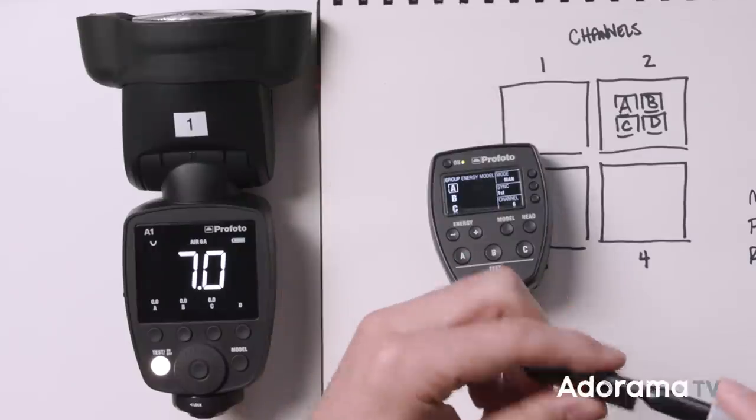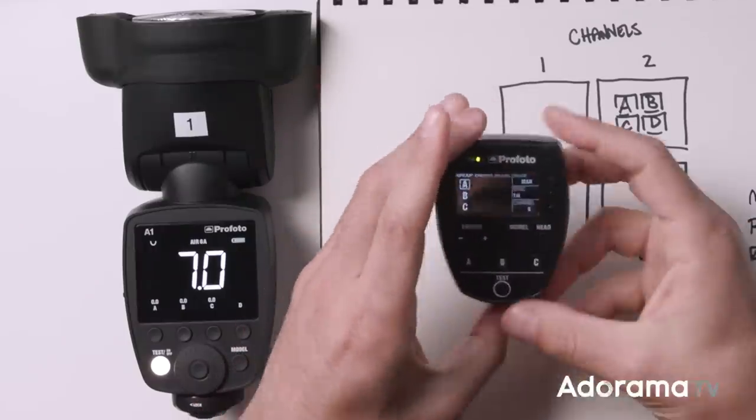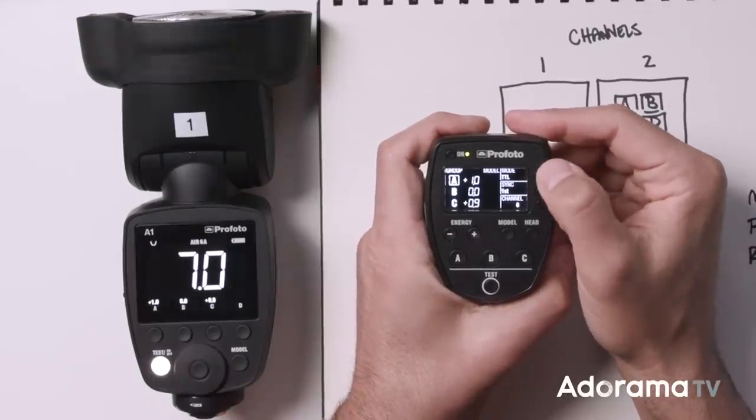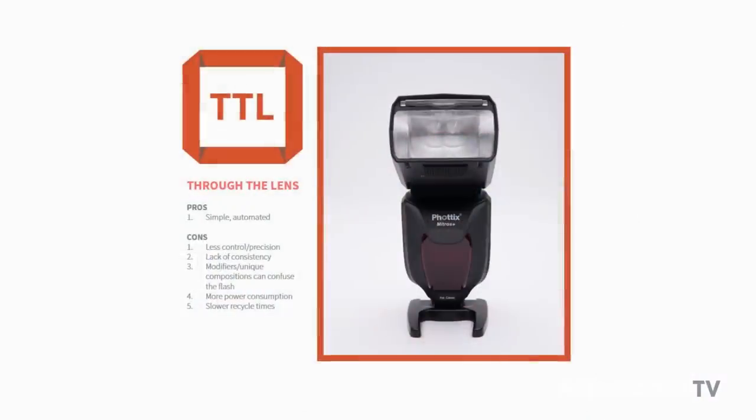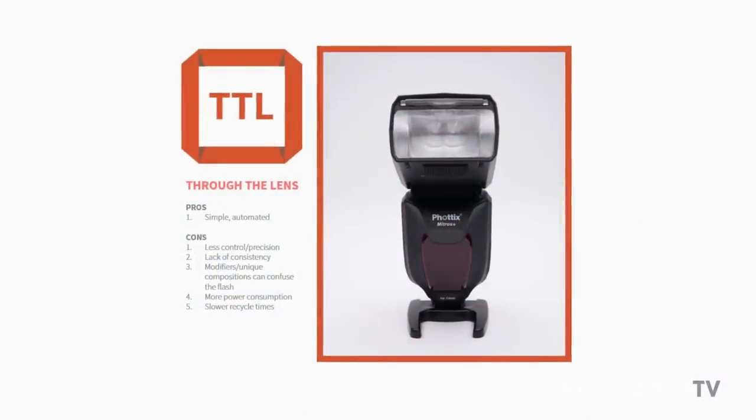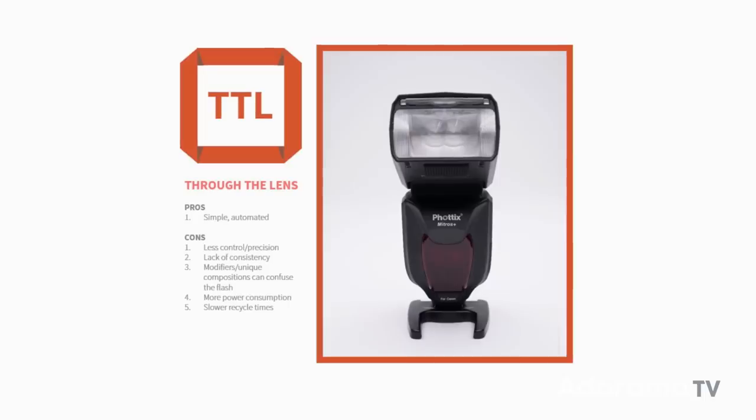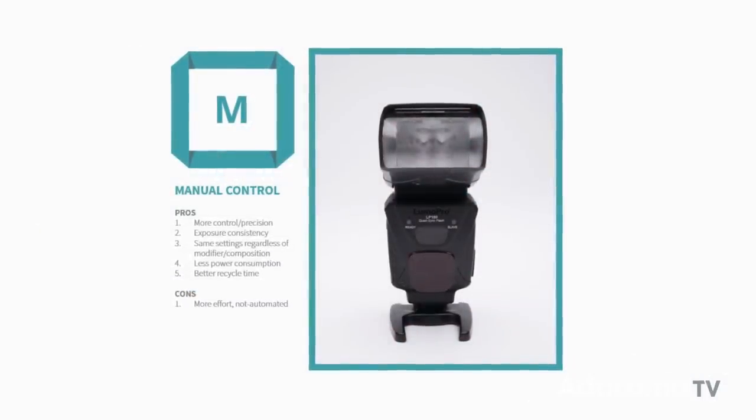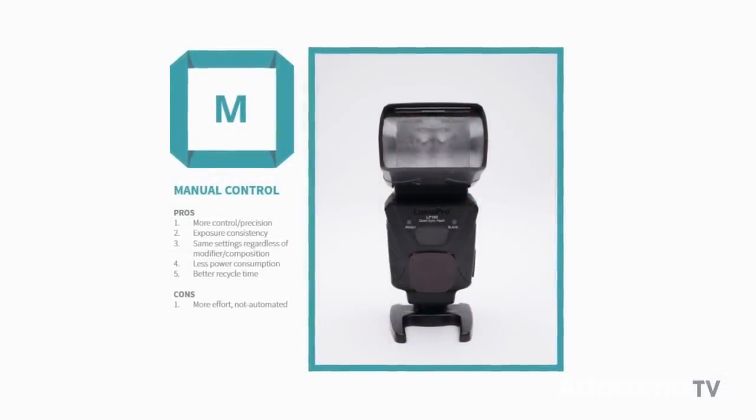Next, we're going to talk about the exposure modes. So you'll notice on this remote that I have the ability to flip this from manual over to TTL. Now TTL or through the lens, it's basically allowing the flash to take a reading and to dial in a setting that it thinks is appropriate. And from there, we would make compensations up or down. Honestly, if you're getting into off-camera flash, I'd probably highly recommend you to stick with manual. That way you have complete control over each of these lights. You know what their power setting is going to be and it's not going to change.